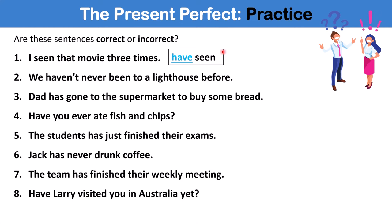And number two is also incorrect. Here we have a double negative. It should be, we have never been to a lighthouse before. Or, we haven't been to a lighthouse before. So, you can take out never or remove not. Number three is correct.